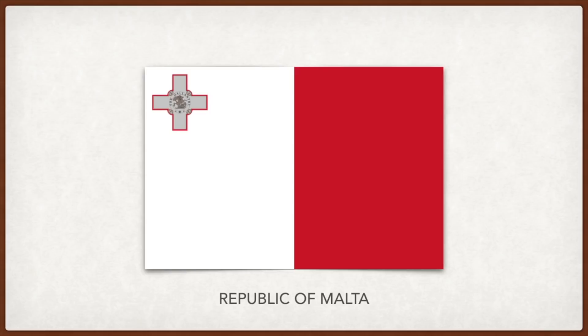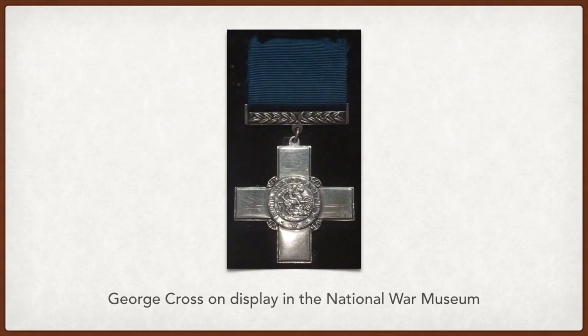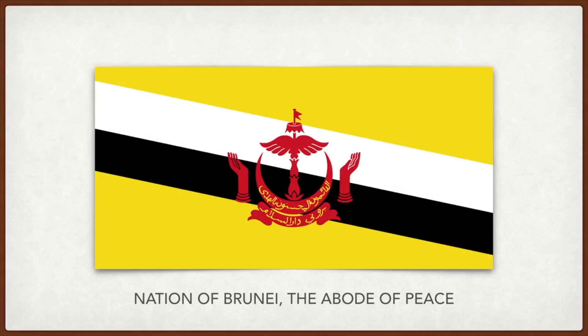Brunei: the yellow represents the Sultan of Brunei — the absolute monarch who rules the country. The black and white stripes represent his two chief ministers; the crescent represents Islam; the parasol above it is a symbol of royalty; and the hands on the side represent the benevolence of the government. On the crescent, written in Arabic, is 'Always render service by the guidance of God,' and below on the ribbon is written 'Brunei, the Abode of Peace.'